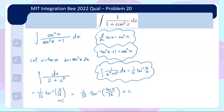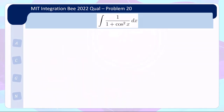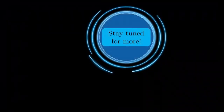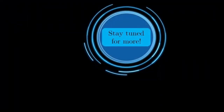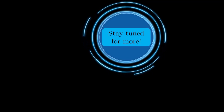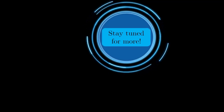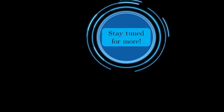Substituting back u = tan x, the answer is (1/√2)·arctan(tan x/√2) + c. That's all for the last problem of the MIT Integration Bee 2022 qualifying round. Hope you enjoyed this entire series — there are some interesting integrals. Stay tuned to the channel for more math videos, and see you soon.